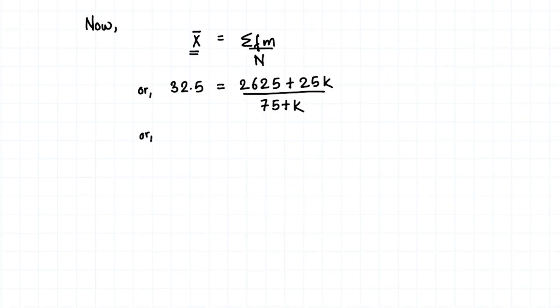Now we can move the 75 plus k to the other side through cross multiplication. We get 32.5 times (75 plus k) equals 2625 plus 25k.